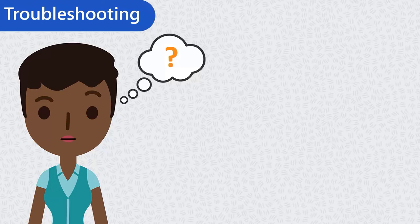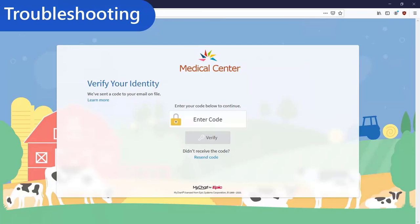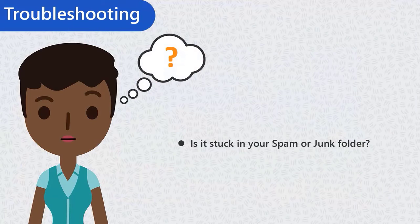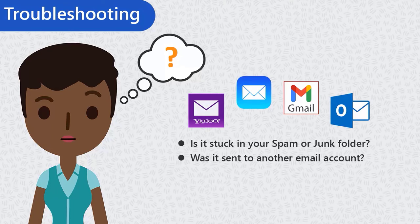Let me show you how to troubleshoot those situations. If you entered your personal information to reset your password but no email came through, check the spam or junk folders in your email. If it's not there, try clicking Resend Code. If you still don't receive the email, it could be that your account has a different email address on file — check your other email accounts to see if the verification code was sent there instead.